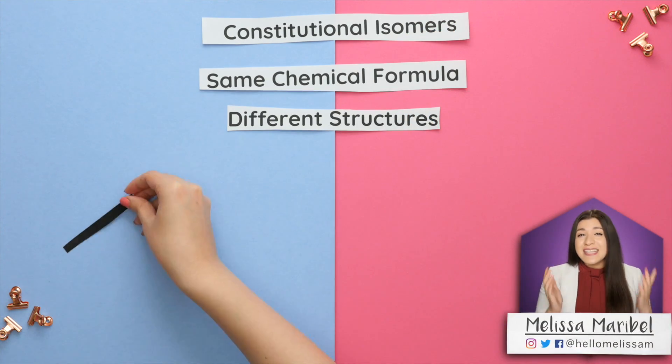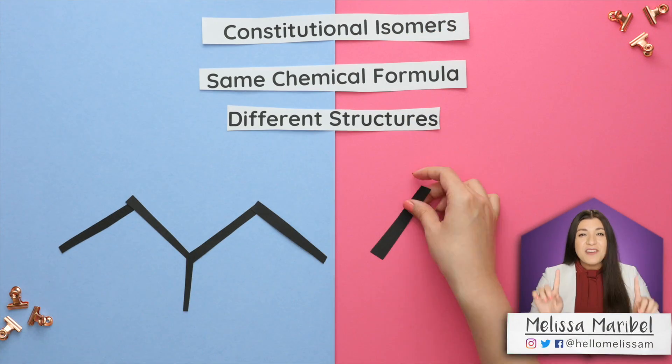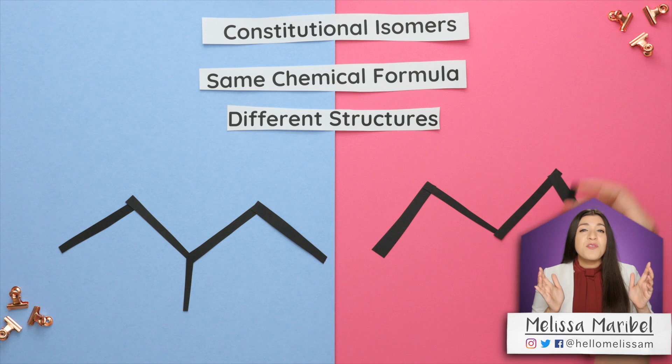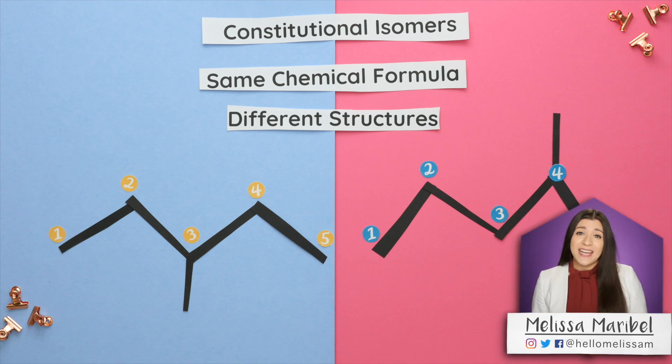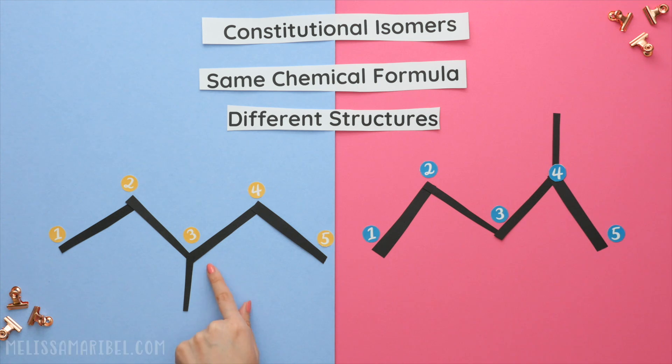Constitutional isomers have the same chemical formula, but different structures. This type of isomer differs in its bonding. For example, this methyl group is on carbon-3, while this methyl group is on carbon-4. So a difference in bonding just refers to a substituent being bonded to a completely different carbon.